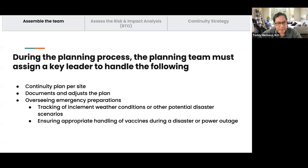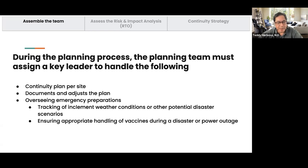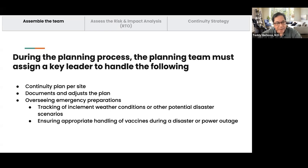The continuity plan has to be per site. If you're a chancellor of a CU, you might want a continuity plan per building, because the risk of each building may be different. One might have laboratories with flammable items, another may have offices with lots of people, and another may have classrooms repurposed for isolation facilities. If there is a fire there, you need updated plans.